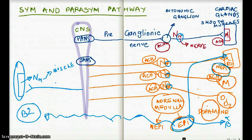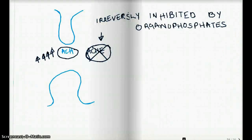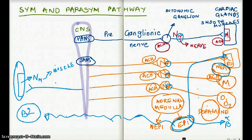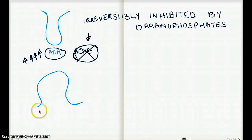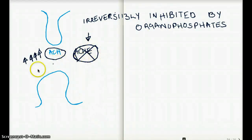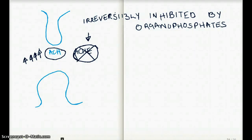Now let's see what happens when we have organophosphate poisoning. We have a synapse with a presynaptic complex and a postsynaptic complex. Acetylcholine is released from the presynaptic complex, and there is an enzyme in the synapse called acetylcholinesterase whose job is to break down acetylcholine. But when we have organophosphate poisoning, the organophosphate irreversibly inhibits acetylcholinesterase, which really increases acetylcholine levels in the synapse.